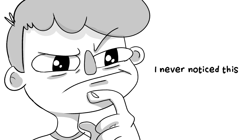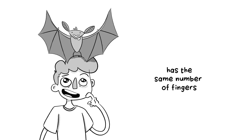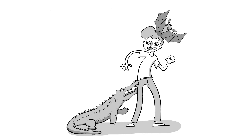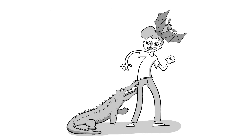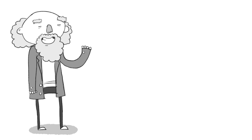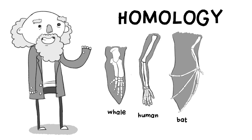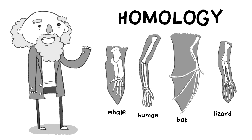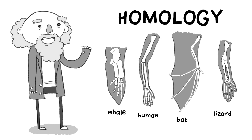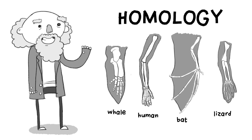You know what? I never noticed this, but my pet bat has the same number of fingers as my pet alligator. Isn't that a coincidence? One of the main arguments Darwin used for his theory was that of homology — these odd similarities between very different animals.